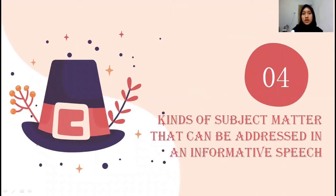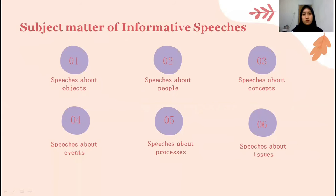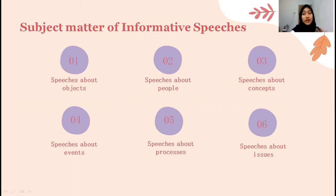Fourth material: kinds of subject matter that can be addressed in an informative speech. Number one, speeches about objects — this is concrete information about any non-human things, like a plant or animal. For example, you can explain about a university, the Grand Canyon, and others.